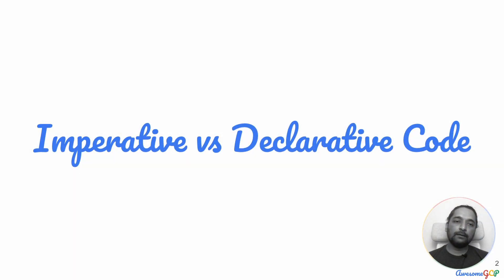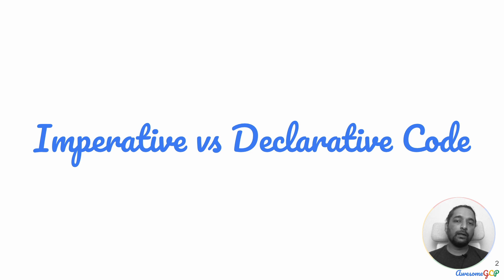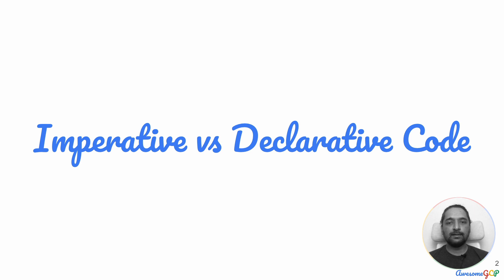In this video, we're going to look at the difference between imperative code and declarative code. This might be something you've come across when reading about some new technology and they say you write the code in a declarative fashion, and you're wondering: is that a good thing or a bad thing, and what does it imply for what we intend to do?